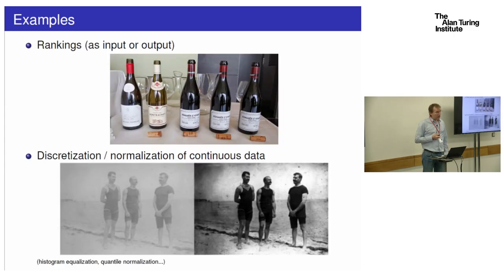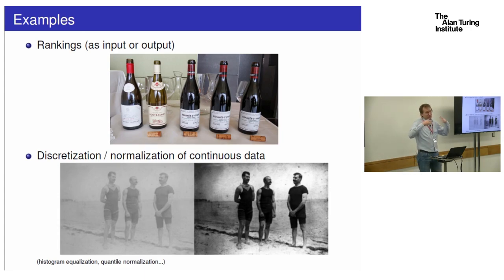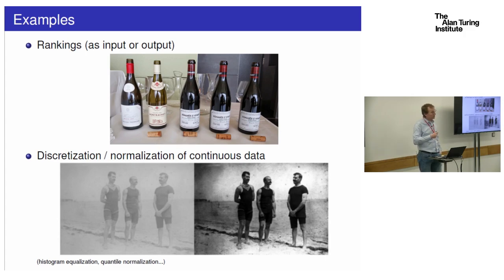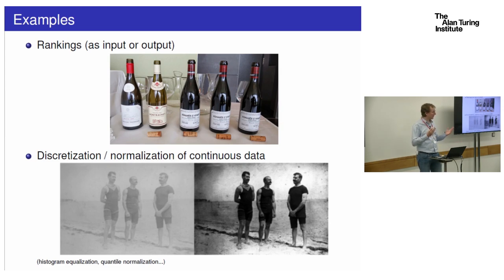Why would we care about permutations? In the world of data science, one reason is that sometimes we have data which are permutations — imagine collecting data about preferences of people on drinks, for example. Then directly, what you ask and what the data you collect naturally are permutations. There are other applications where you may want to play with permutations. Take the example of images: when you have data which requires some normalization.